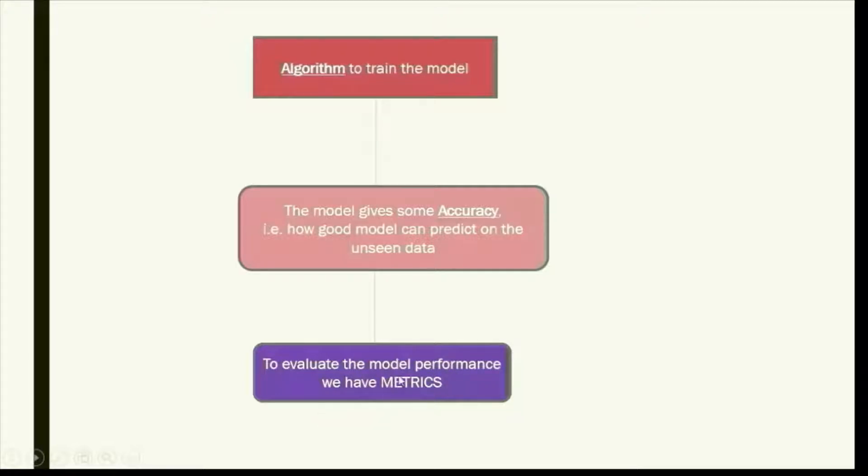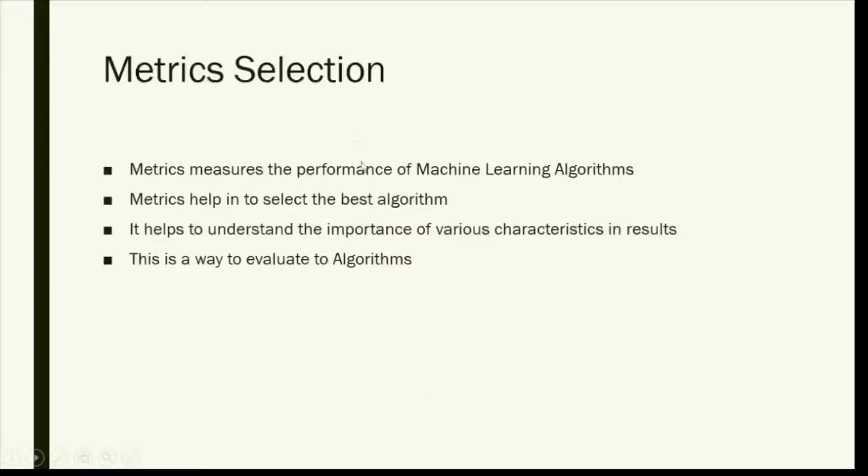We have metrics for various algorithms. We are dealing with regression today. Metric selection we do for measuring the performance of our machine learning algorithms. This helps us to select the best algorithm and then we can further go on with this algorithm to train our model and boost the performance.